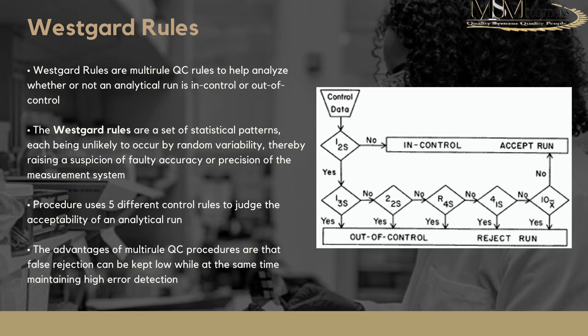This procedure uses five different control rules to judge the acceptability of an analytical run. The advantage of using a multi-rule QC procedure is that false rejections are kept to a minimum while still maintaining a high error detection system. When you read your QC results, the first question you ask is: is this value outside my 2s limit? If no, it's within control and you can accept the results.